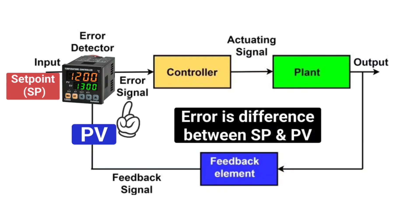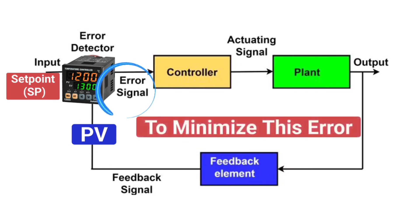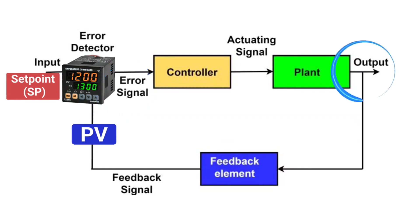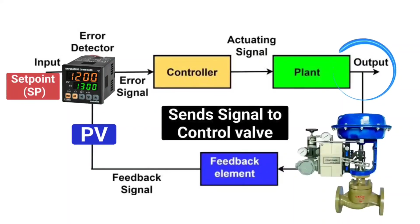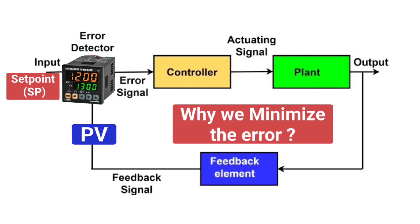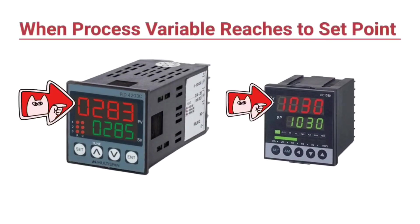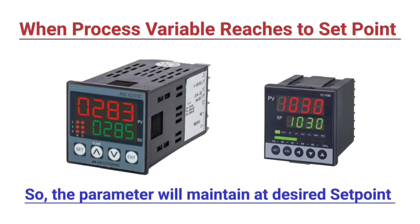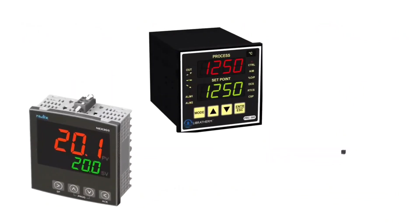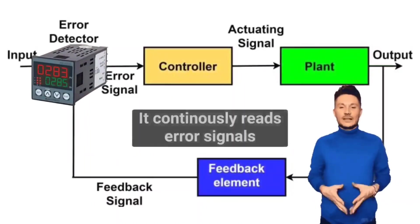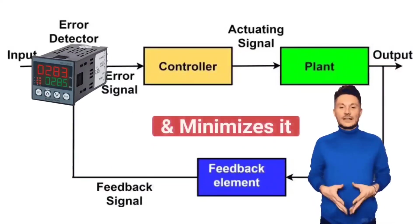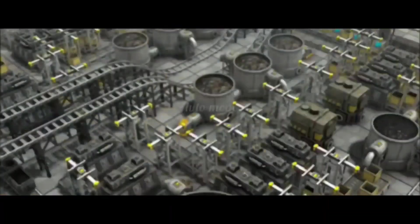So, error is the difference between set point and process variable. To reduce this error signal to zero or to minimize it, the PID controller sends a signal to the control valve. When the process variable reaches the set point, it means the parameter will maintain that desired set point, and this is the main aim of PID controller. So it continuously reads error signals and keeps minimizing it.